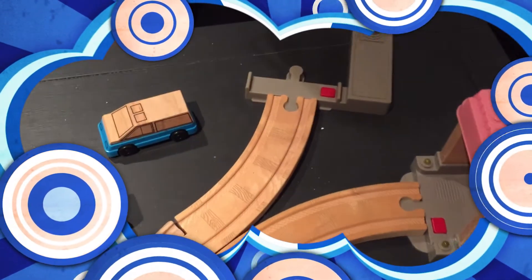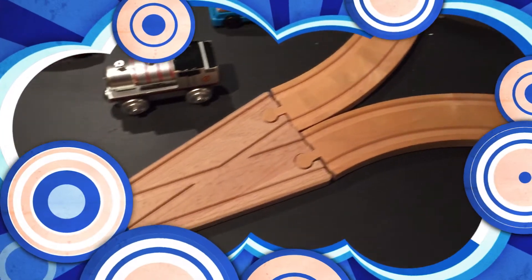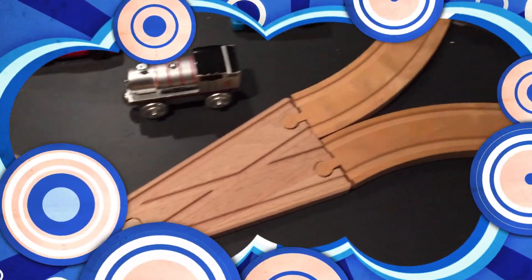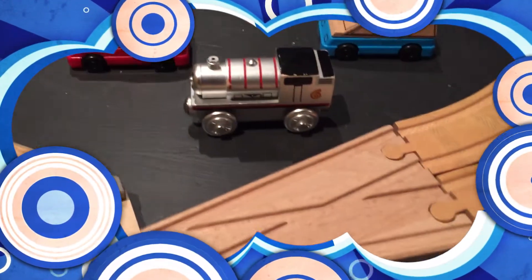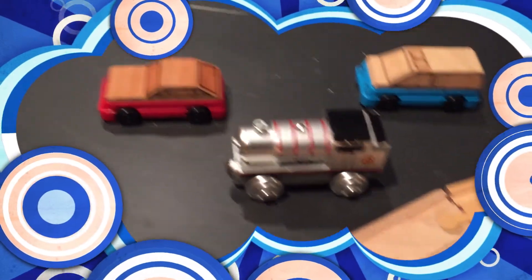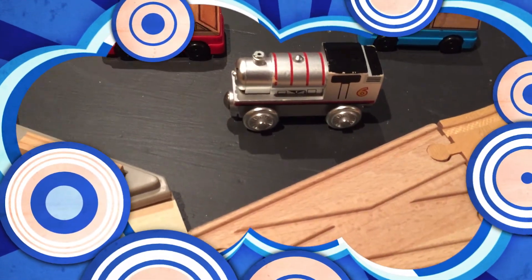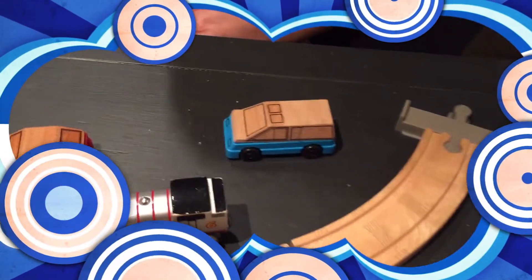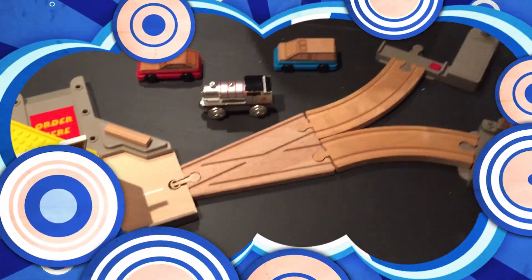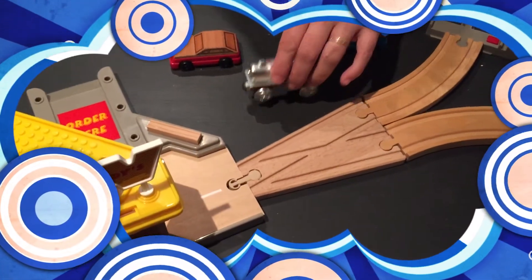Neat thing about this, you can actually mix it in with Thomas the Train tracks. Like right here we've got a silver Thomas, a silver Percy, and we have the two cars. So let's see how we can play with all this and have so much fun.